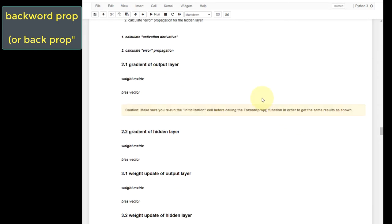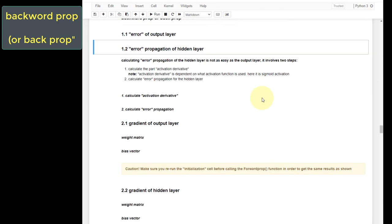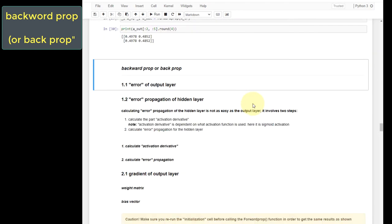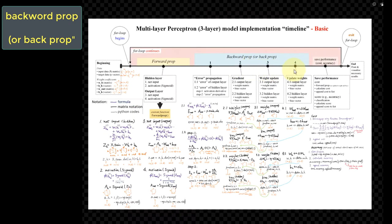Here is the outline of the steps. Let's visit the cheat sheet. Backprop has four steps. The matrix notation, the meanings, and the Python implementation are clearly written underneath in this cheat sheet.